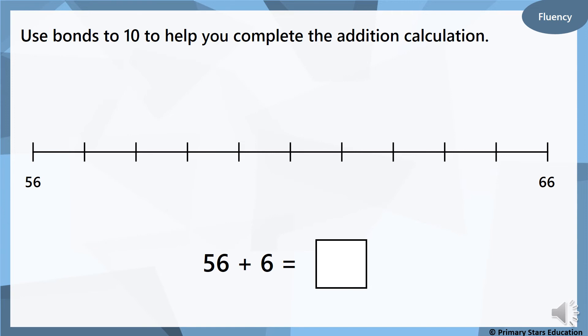Right, now we have a blank number line. But we're still going to use our number bonds to 10 to help us. So we are now doing 56 add 6. So we're starting at 56. What's 6's number bond to take us to the next 10? 6 add 4 is 10. So the next 10 is 60.